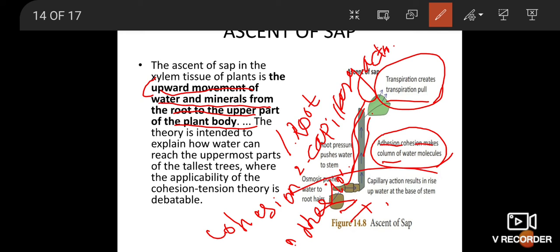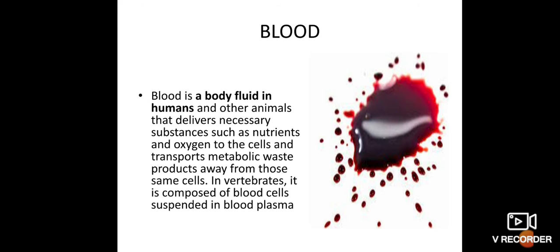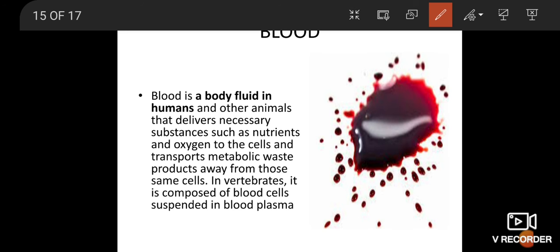Next topic: blood. What is blood? Blood is the main circulatory medium in human body. Blood is a bodily fluid in humans and other animals that delivers necessary substances such as nutrients and oxygen to the cells and transports metabolic waste products away from those same cells.